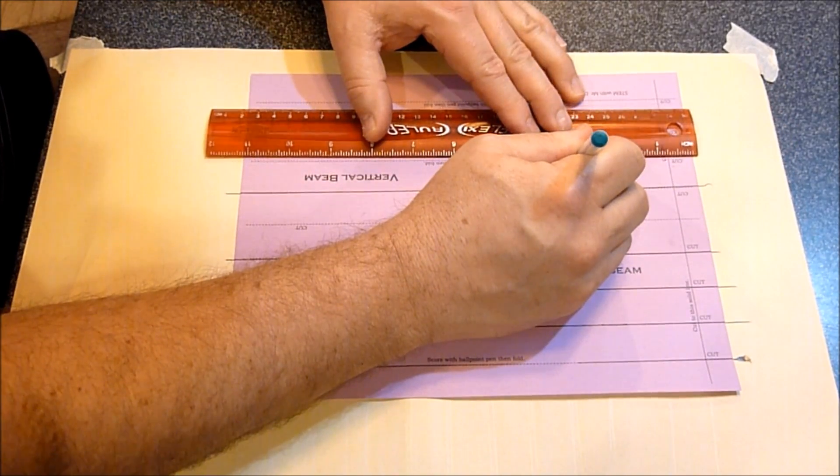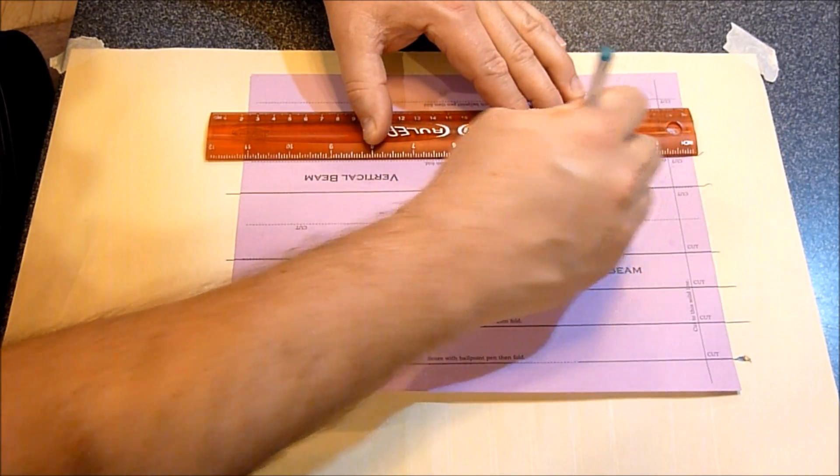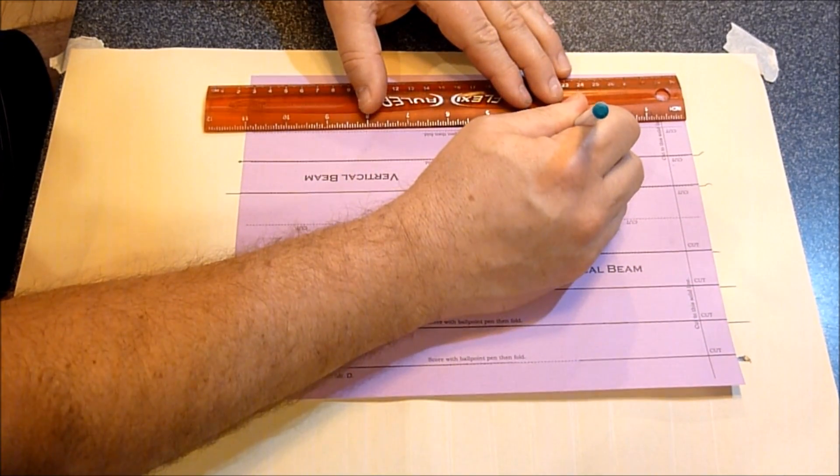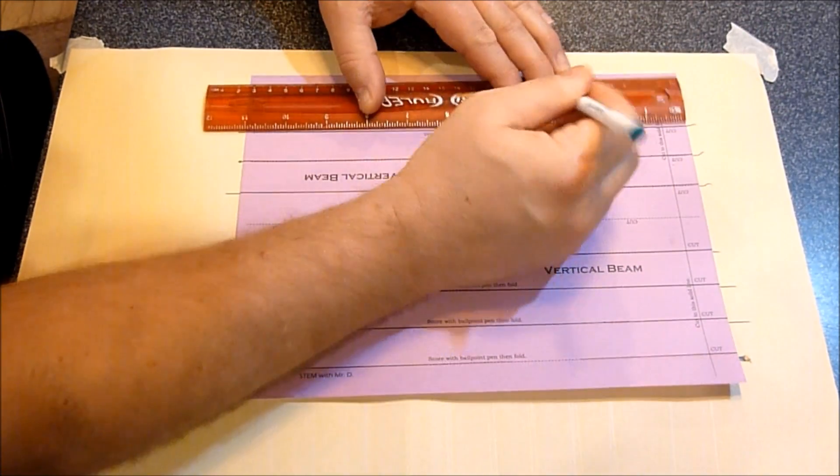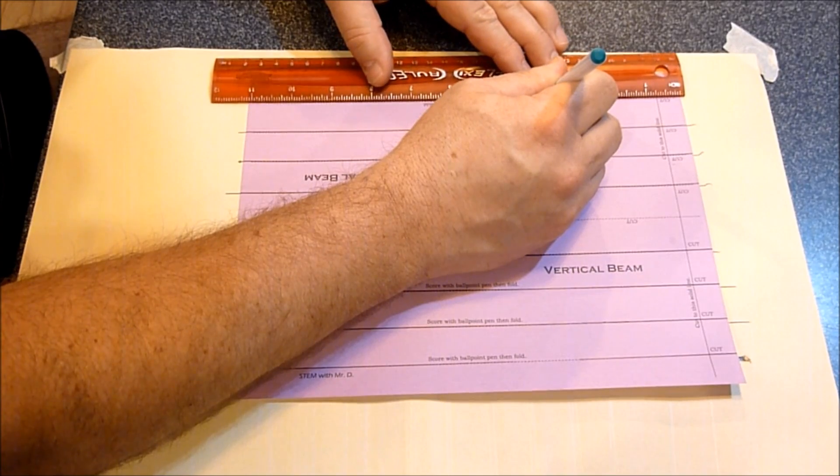As you can see, it's pretty quick once you get the hang of it. I'm also using a sheet underneath the paper, and what that does is allows the ballpoint pen to make a nice groove in the template.